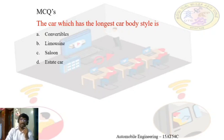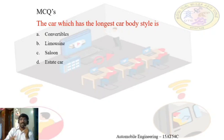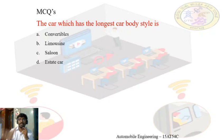The second MCQ asks: which car has the longest car body style — meaning the longest length? The options are convertible, limousine, saloon, and estate car. Convertible has a retracting roof mechanism, saloon has two-door or four-door types, estate car has an extra door, but the limousine is the longest vehicle with the most number of partitions and the greatest wheelbase. The correct answer is option B — limousine.